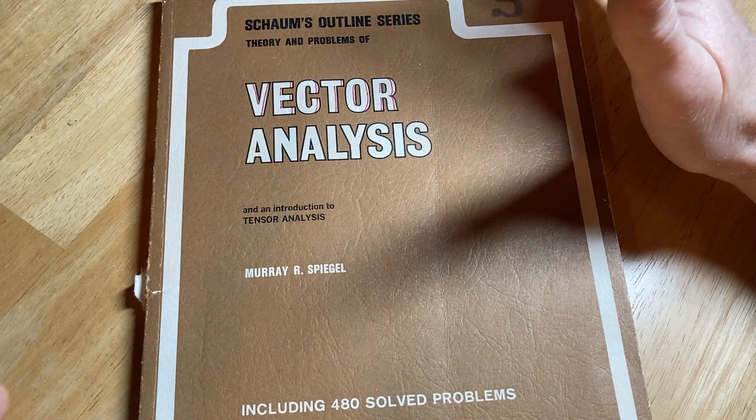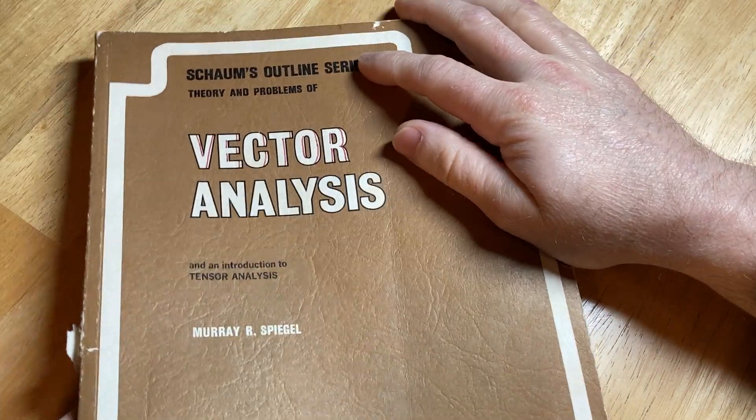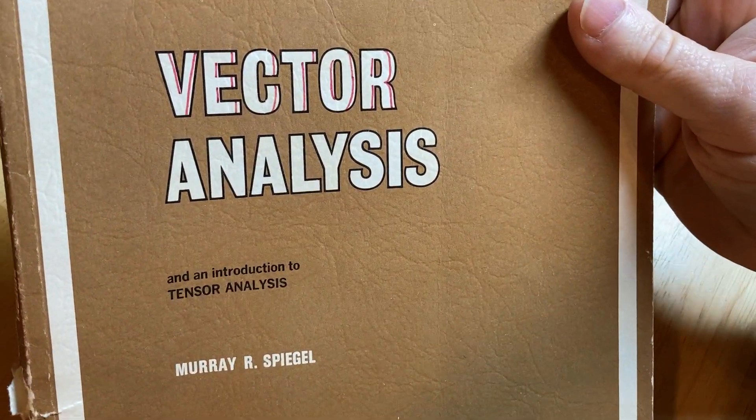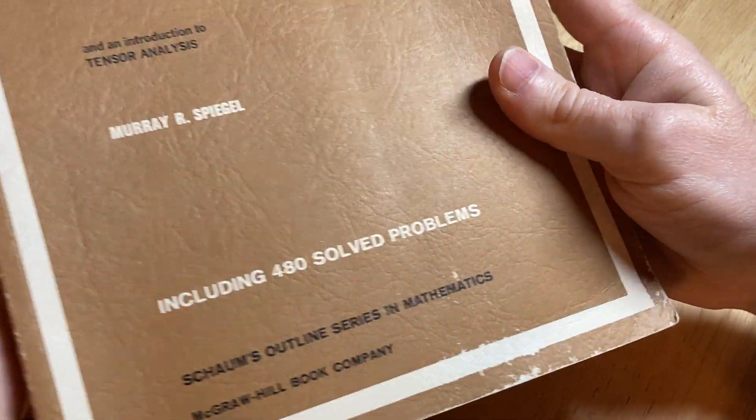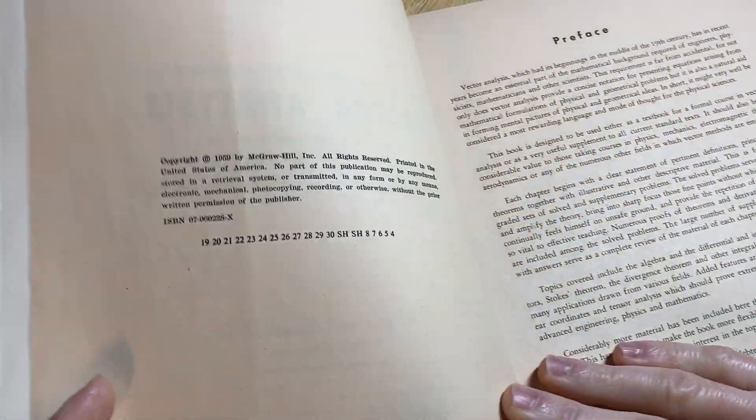Today we have a Schaum's book that is really old. It's called Vector Analysis, An Introduction to Tensor Analysis. And it has 480 solved problems, it says. McGraw-Hill Book Company. This is an old book.